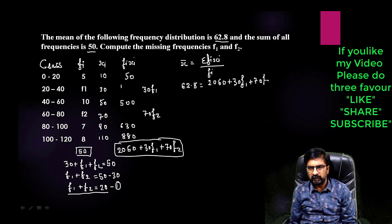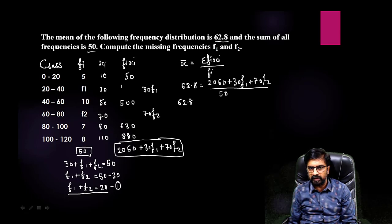We will keep it here. This 50 will go here. 62.8 into 50 is equals to 2060 plus 30 f1 plus 70 f2. Now if you will multiply, 6 times 8 is 48, 5 is 40, 0 carry 1, 3140. And we had removed this decimal with 0.